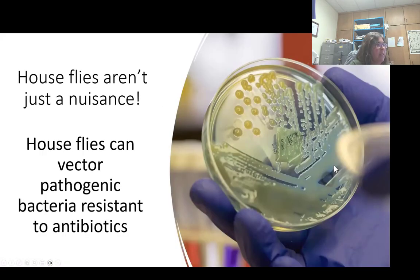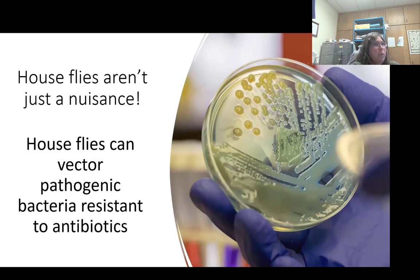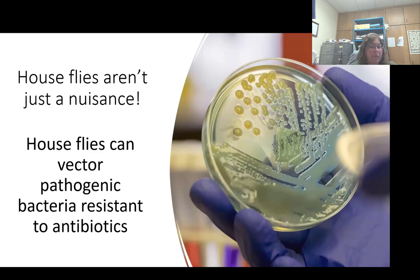We're going to talk about pesticide resistance and integrated pest management. We'll start by talking about house flies and then roll into some other flies. House flies are more than just a nuisance — they are also known pathogen carriers for many different things, as well as bacteria that is now resistant to antibiotics. This can cause real concern when we're trying to take care of our animals and get rid of these pest insects.